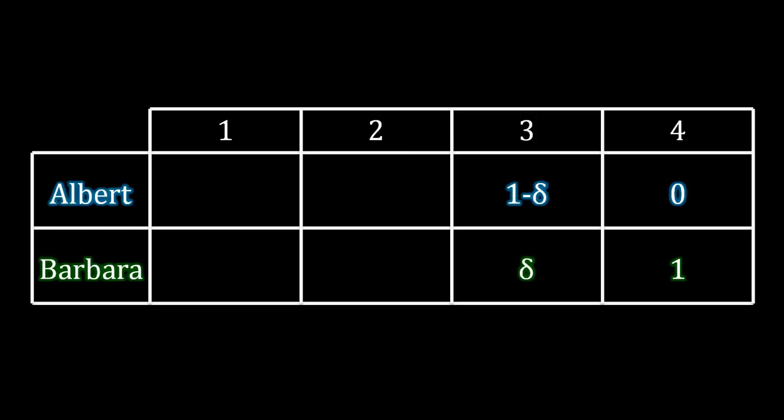That's the third stage. Now we can take that information and move back to the second stage. Now it's Barbara's offer to be made. Barbara can anticipate what happens if Albert rejects her offer. Albert in the next stage, period three, we know what's going to happen there. Albert will make an offer to Barbara which Barbara will accept, and Albert will receive a payoff of one minus delta. So Albert's value of rejecting in stage two is he gets a period of delay, a discount factor, multiplied by his payoff for stage three, which is one minus delta.